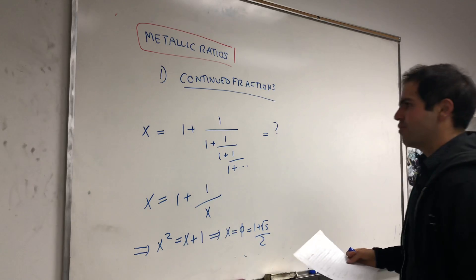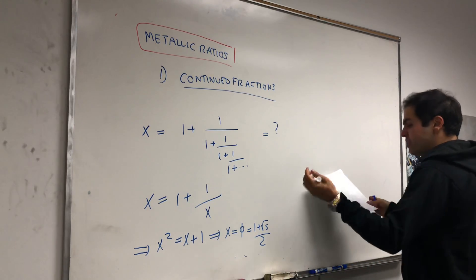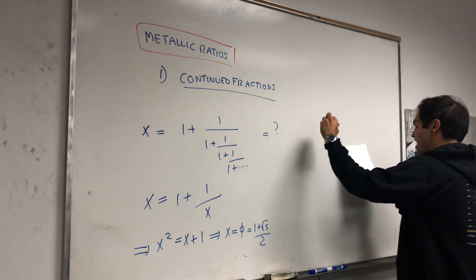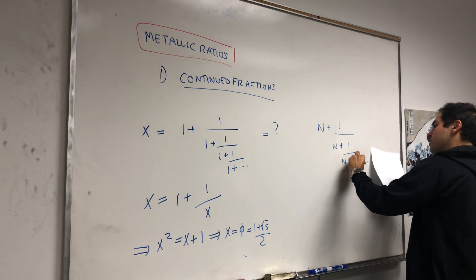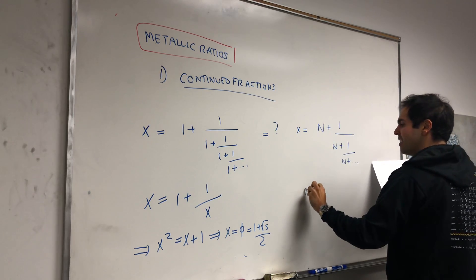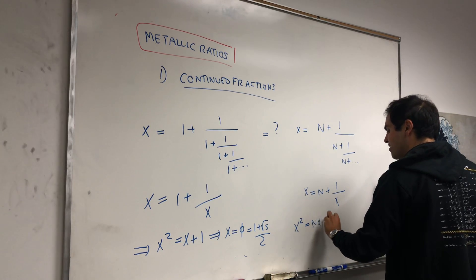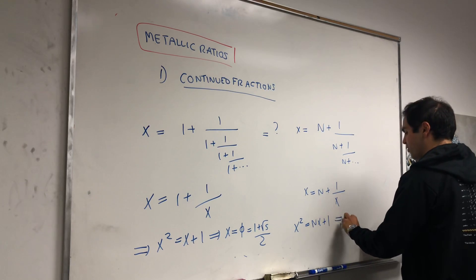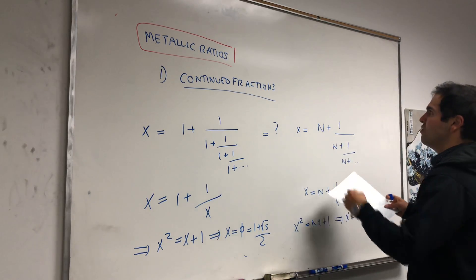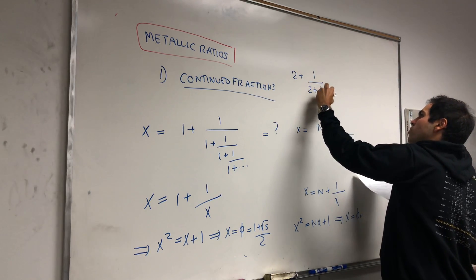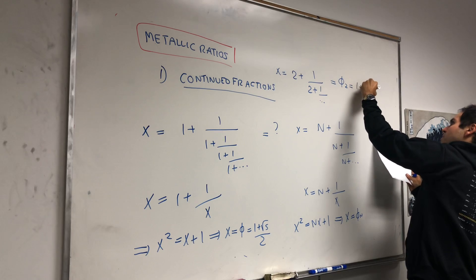Where do the metallic ratios appear? Something similar — what if you replace 1 by n? What is the value of n plus 1 over n plus 1 over n plus dot dot dot? If you let x be that value, then x equals n plus 1 over x, so x squared equals nx plus 1, giving the metallic ratio phi_n. For instance, 2 plus 1 over 2 plus 1 over 2 plus ... equals the silver ratio, which is 1 plus square root of 2.